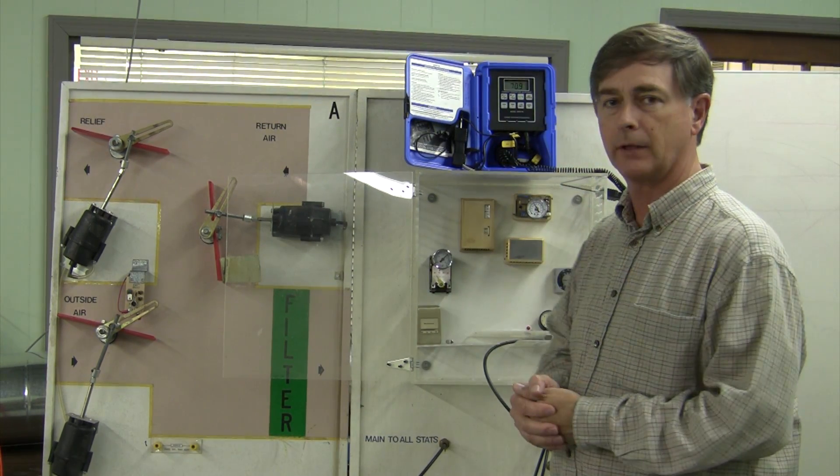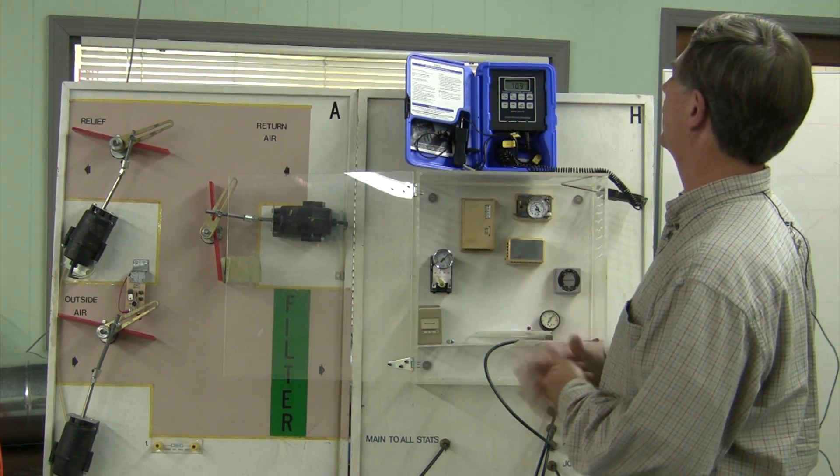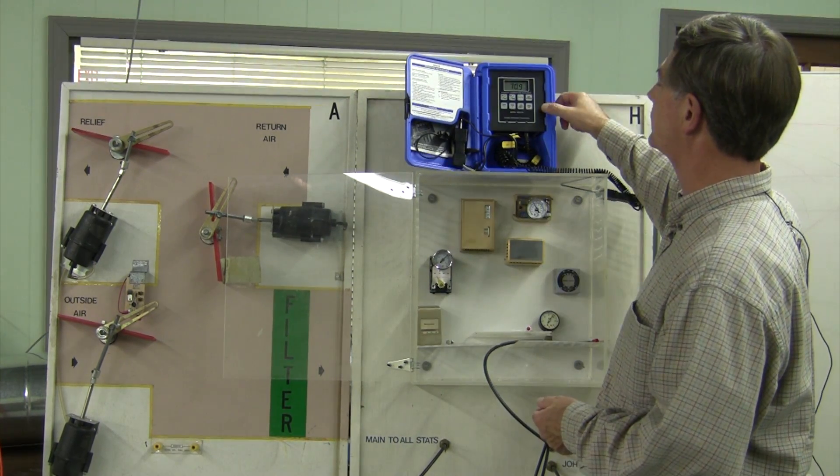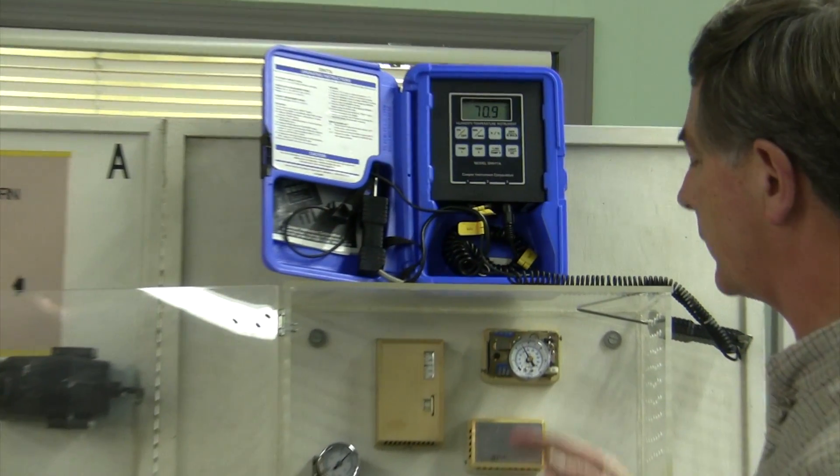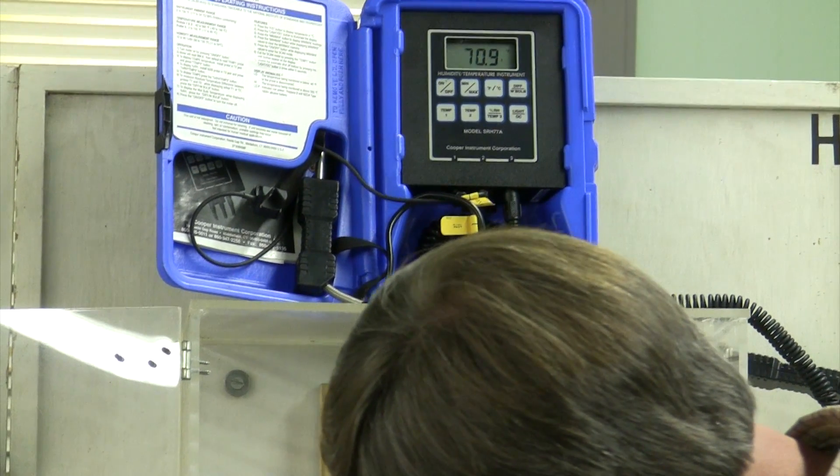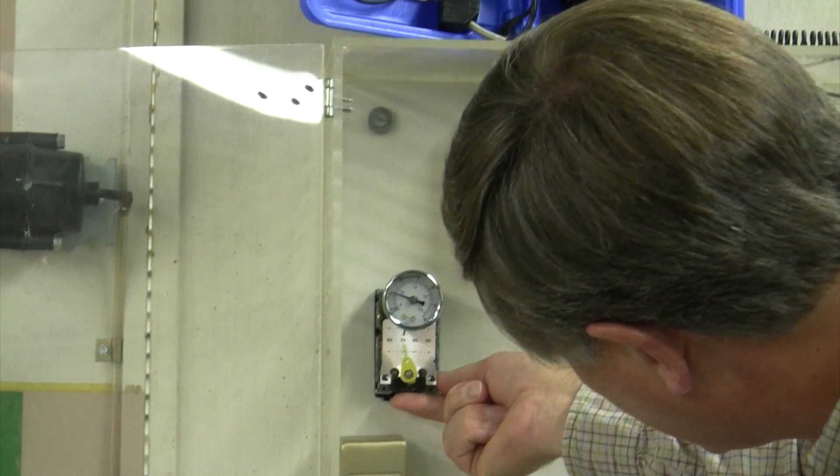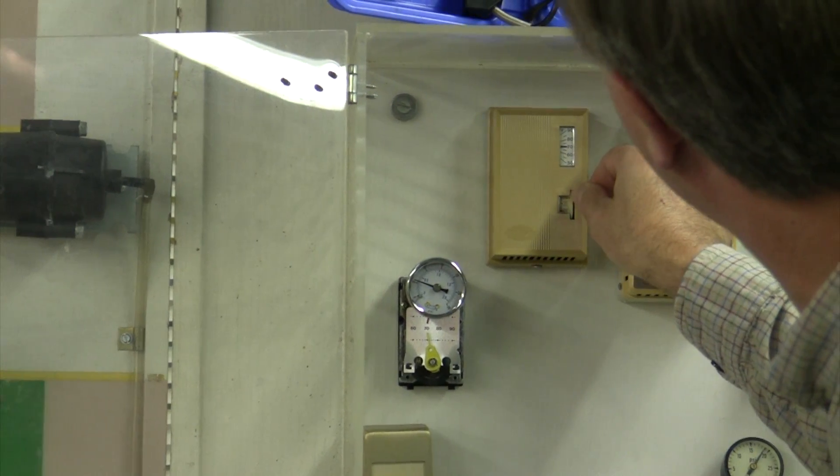We're gonna do four stats and do it very quickly. So we're gonna check our ambient temperature with a nice digital thermometer. I'm reading right at seventy-one degrees. I'm gonna go ahead and dial in my thermostats and try to get as close to seventy-one degrees as I can.